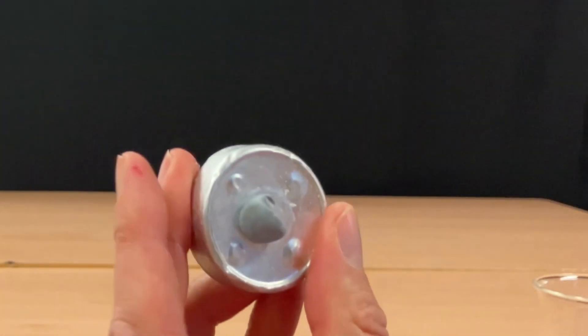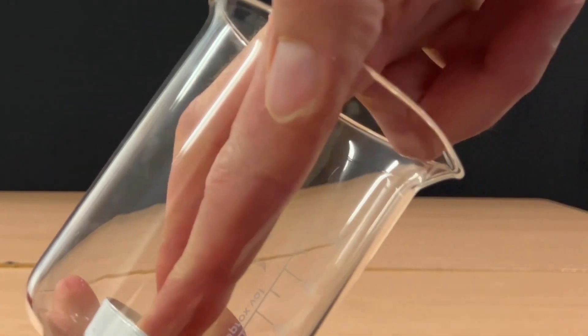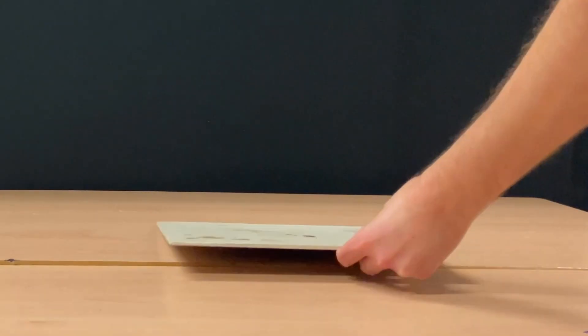The first thing you need to do is get two tea lights and blu-tack or stick down in some other way one of the tea lights into the bottom of a 250mm beaker.